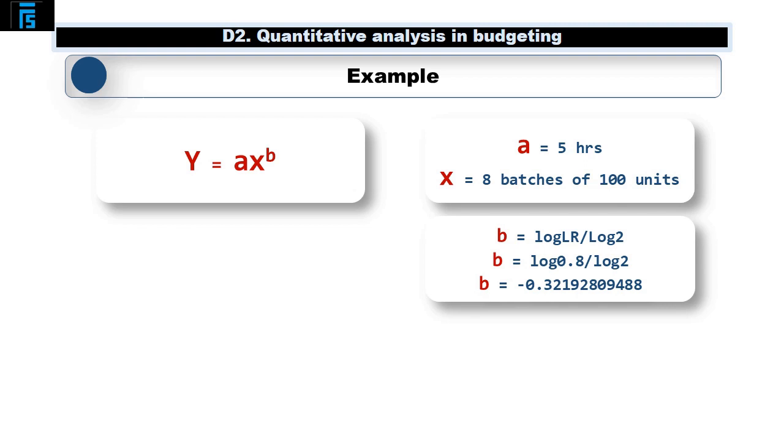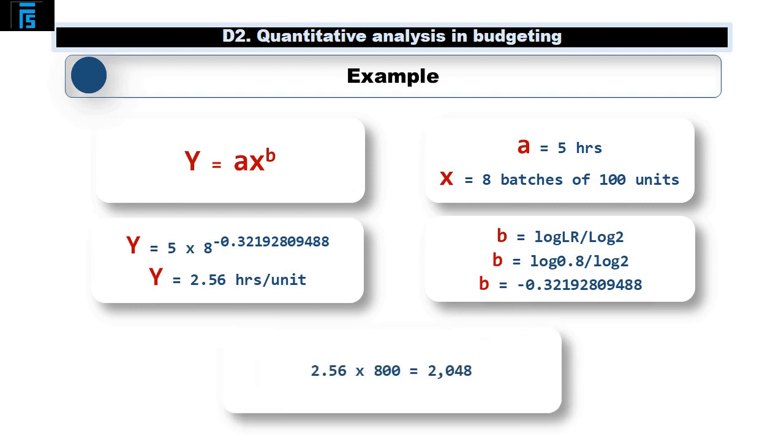We need to calculate b before we can put the formula together, so let's do that first. The formula will be log(0.8) / log(2), giving -0.32192809488. Try to save the full number in your calculator rather than rounding it up or down to a few decimal places. You will get a different answer with a rounded figure. Now that we have b, we can put the full formula together. Y = 5 × 8^(-0.32192809488). This gives us 2.56 hours per unit, as calculated using the tabular method, and also the same cumulative total of 2048 hours for the 800 units as previously calculated.